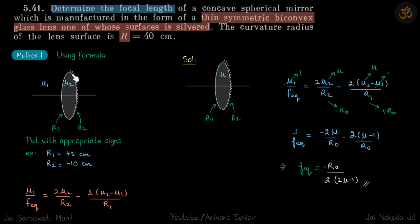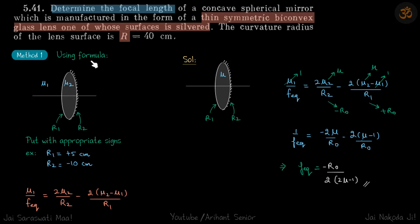We have a lens one side of which is silvered, and we need to determine the focal length of this system. The incident ray reflects back, so the system is actually a mirror. For this equivalent mirror we need to find the focal length — first I'll quickly find it using the formula, and then we'll see how to do it in a proper way.